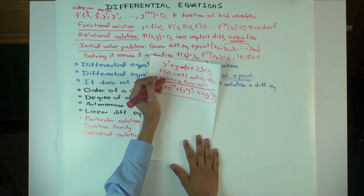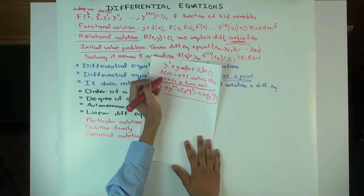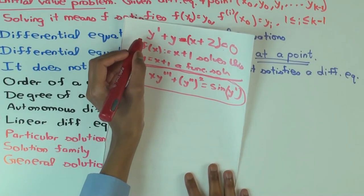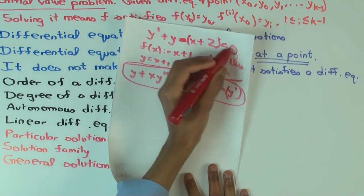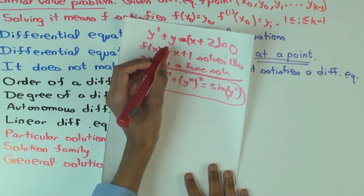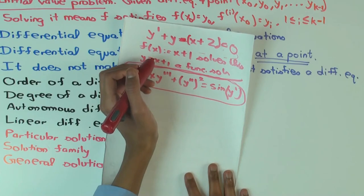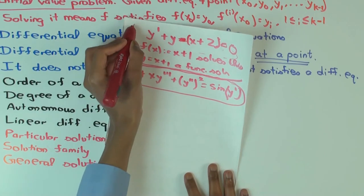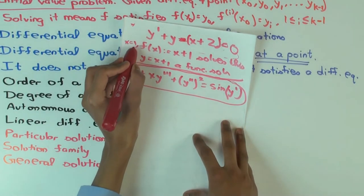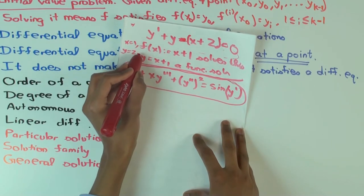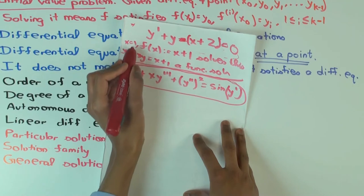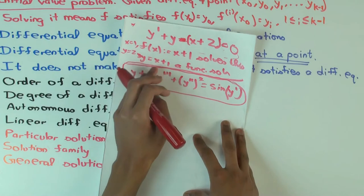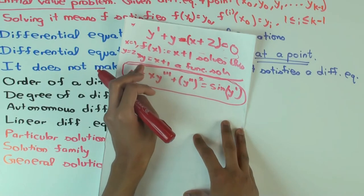Going back to our example: what initial value condition would have y = x + 1 as a solution? If x is 1, then y is 2. So x₀ = 1, y₀ = 2. Then y = x + 1 is a functional solution which satisfies this condition. So if I give you the differential equation and the condition x = 1, y = 2, then y = x + 1 would be a solution to the initial value problem.